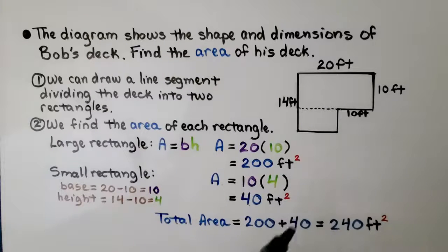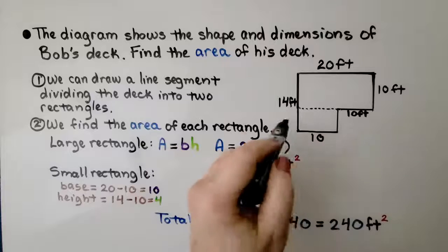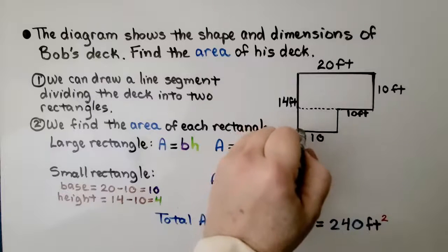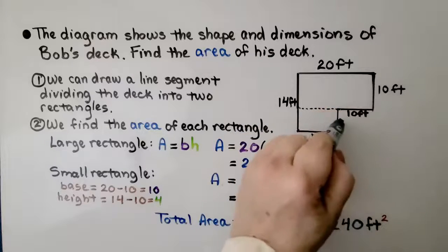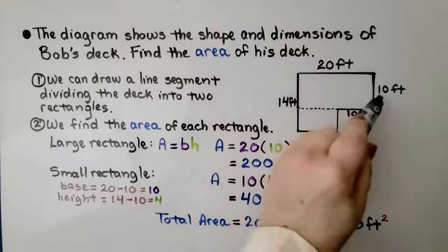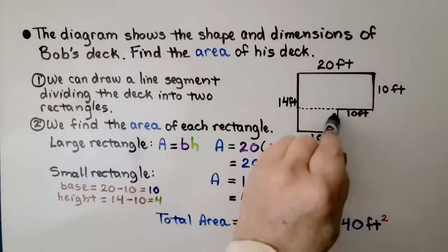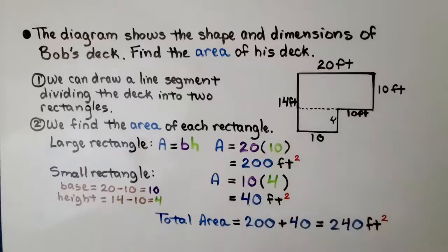So, we know this is 10 feet down here. What's the measure here? Well, this line and this line should equal this line. And if that's 10 and that's 14, this must be 4. So, we've got 10 by 4. That's 40 feet square.